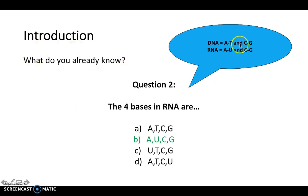And the reason for this is T, which is found in DNA, is swapped for U, which is uracil in RNA.